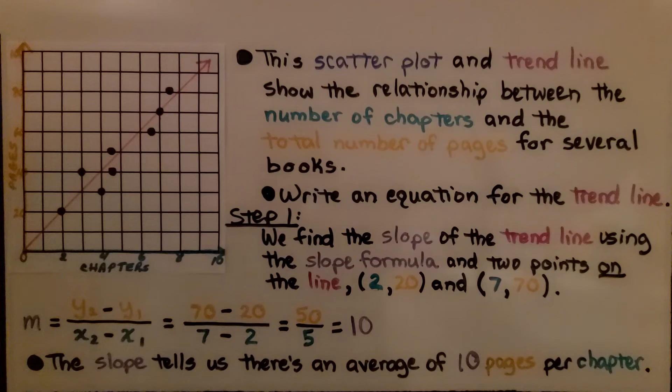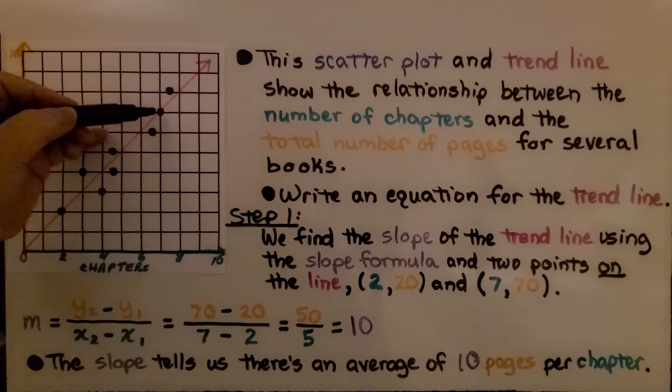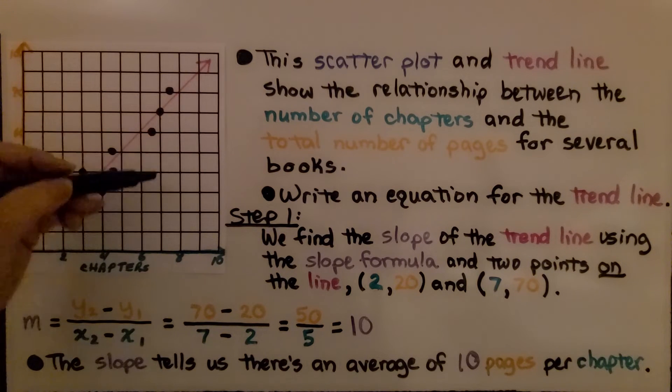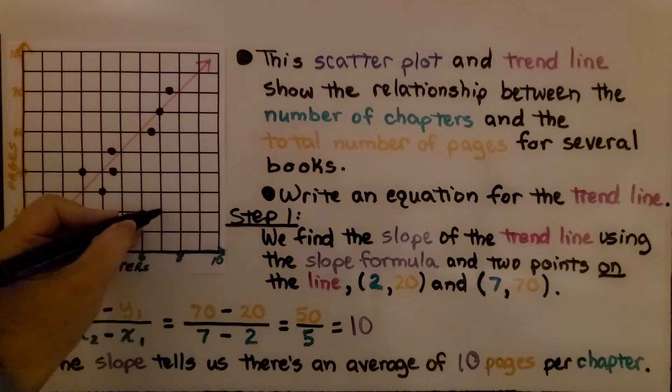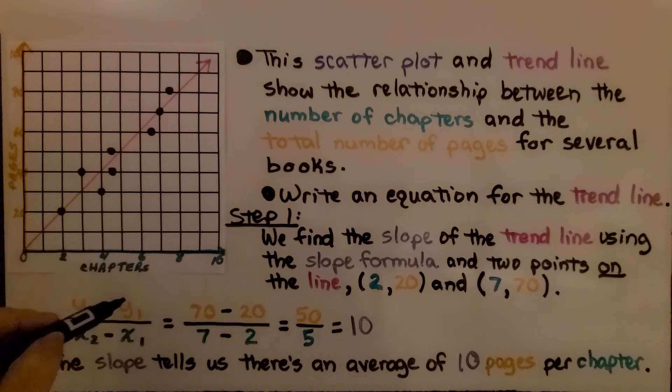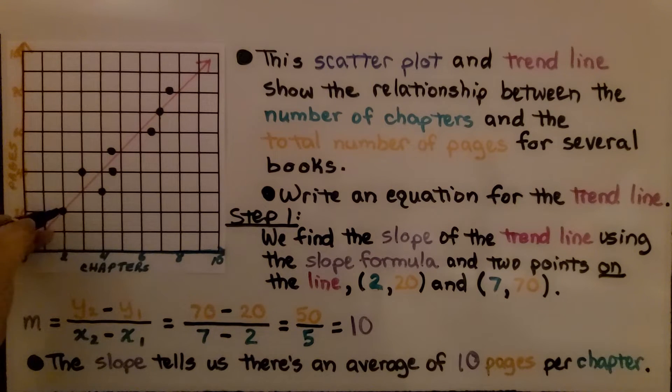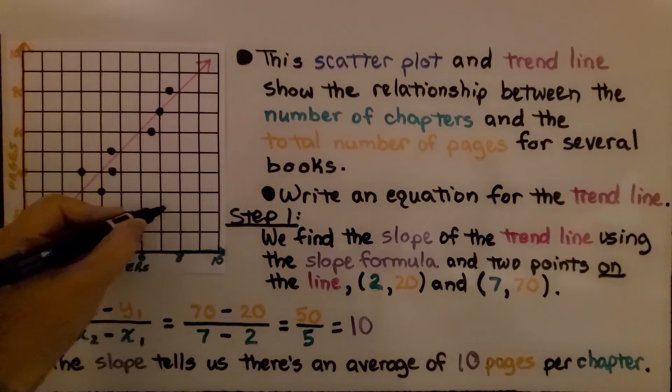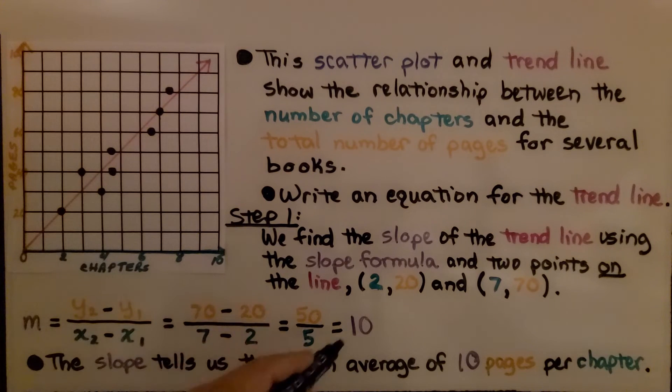We also could have found the slope by counting the rise over the run. These are going by 10s. We have a 20 here, so that's 10, 20, 30, 40, 50, 60. We could have counted the rise going 1, 2, 3, 4, 5 units of 10 each, so that would be 50. And these are going 1, 2, 3, 4, 5, 6 by 1s. So we could count the run 1, 2, 3, 4, 5 to get 50 over 5.